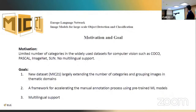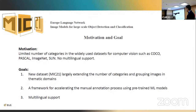The motivation for this work was mainly that widely-used datasets for object detection and classification, like the Microsoft COCO dataset, have limitations. There is a limited number of categories or labels — for example, COCO has only 80 categories. Our primary goals with our dataset are to extend the number of categories, group images in thematic subdomains, and build an ontology of labels covering those subdomains.